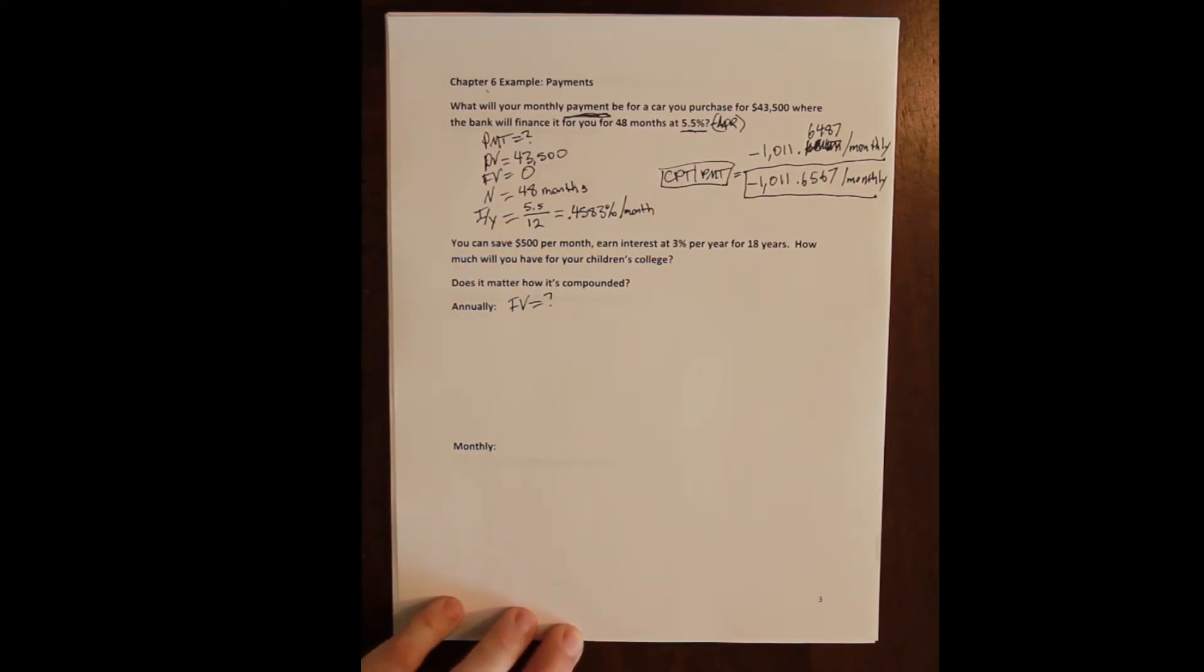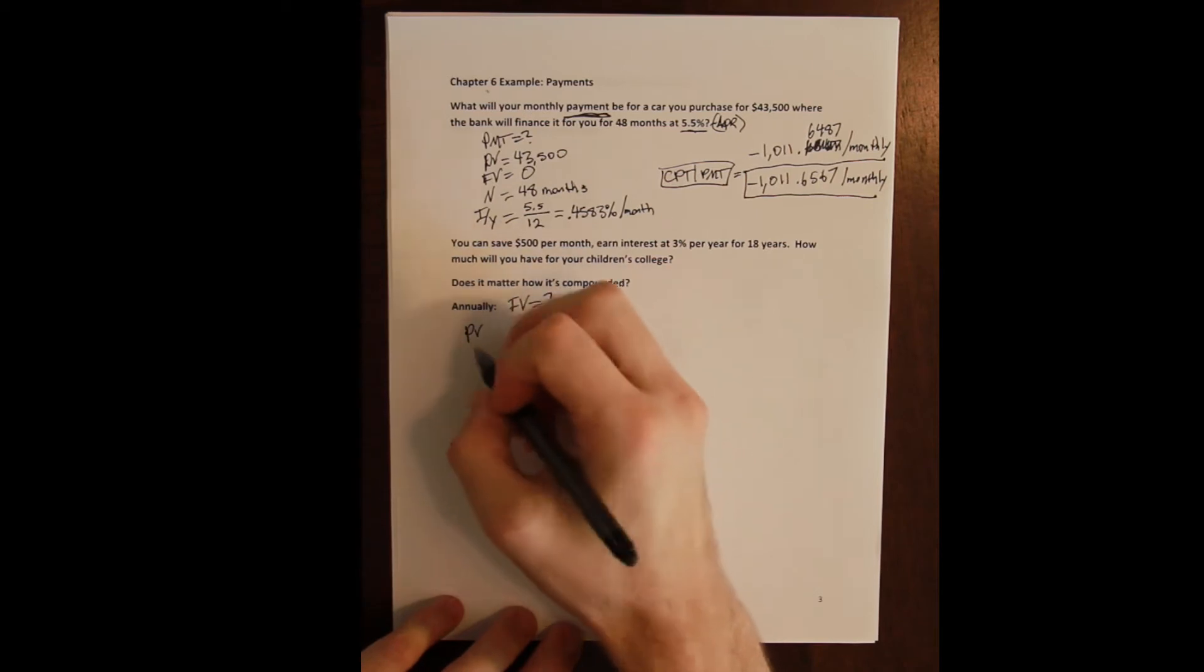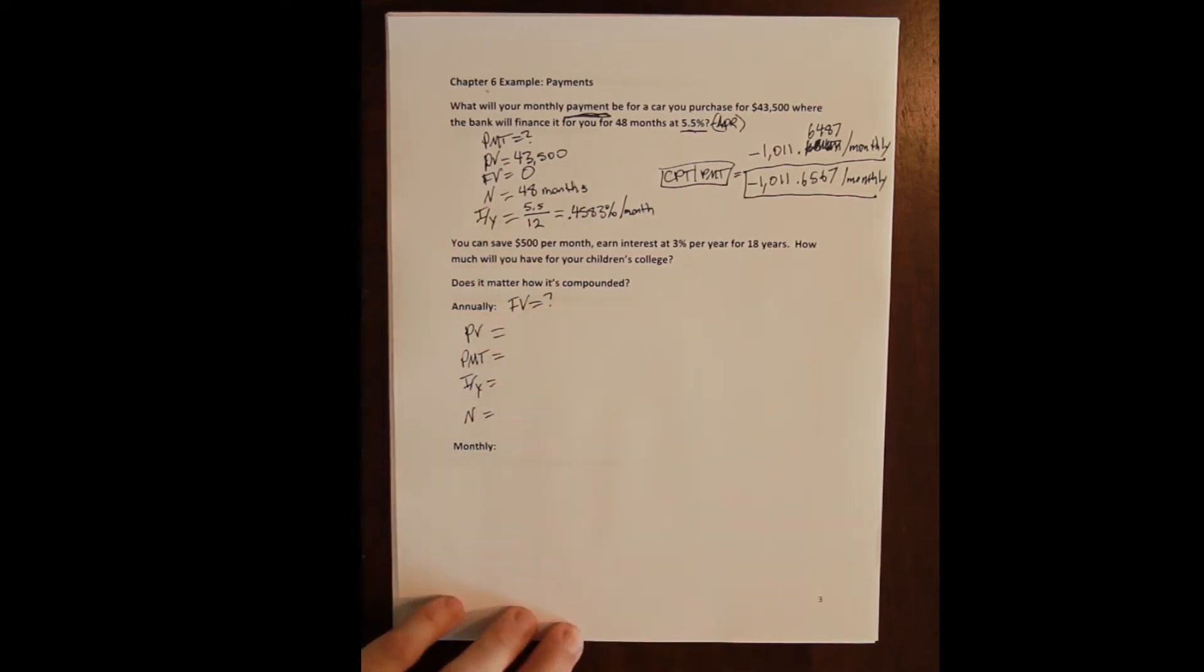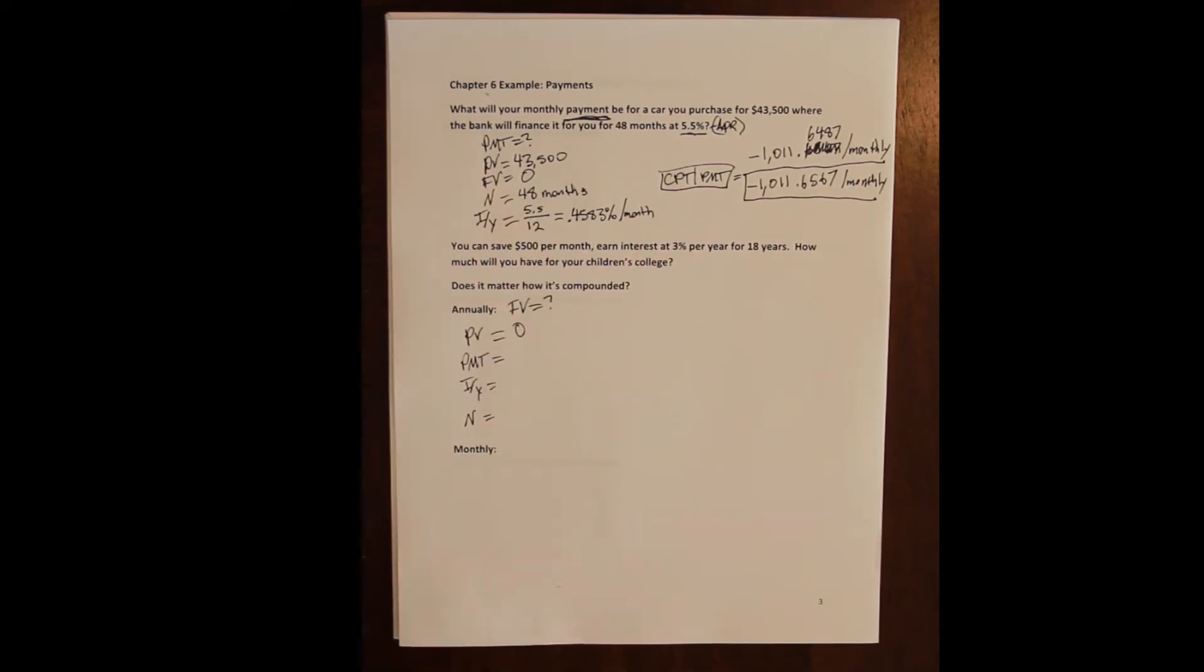That means I need to plug in the rest of the unknowns: my present value, my payment, my I/Y, and my N. Now my present value here is zero because I don't have, or I'm not given, any information about beginning the account with some original investment.